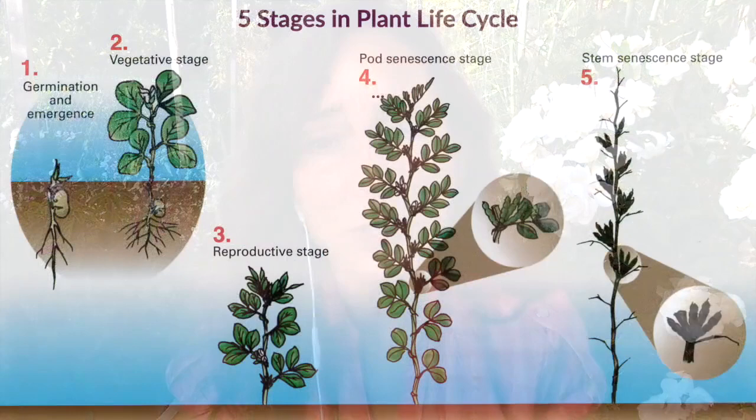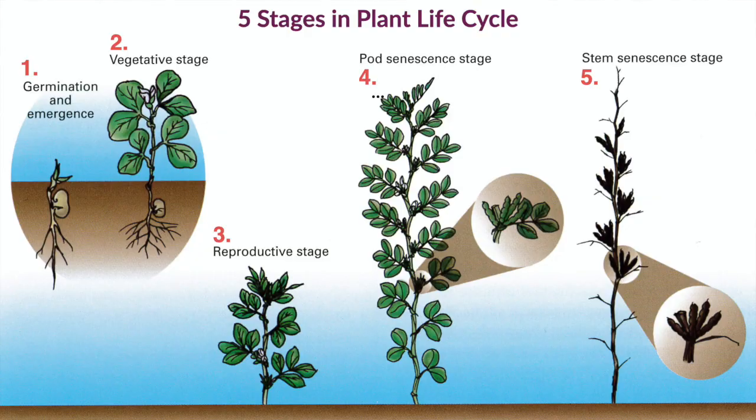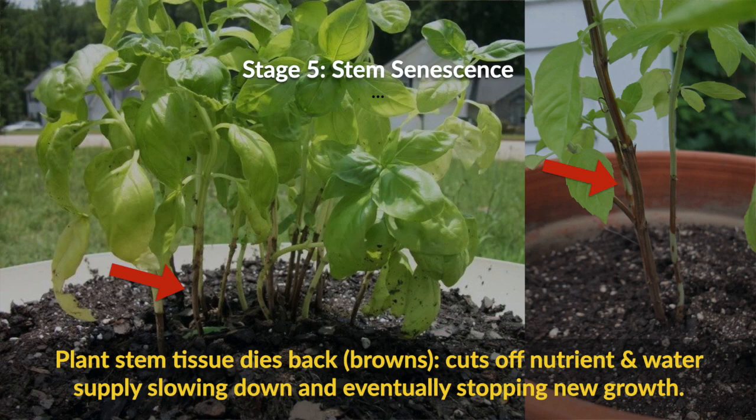The fifth and final stage is stem senescence — where the stem turns brown and dries up. This is game over. The plant can no longer deliver water and nutrients up the stem because it's dying. If you're not saving seeds, get the plant out of the ground — there's no coming back from this. With basil especially, this happens very quickly: the plant flowers, the stem turns brown, and people hope it'll come back. It won't. Pull it out.